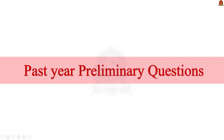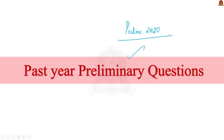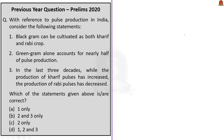Our first session is the previous year question discussion session. In this session, we are discussing three to four questions every day that were asked in the UPSC Civil Services preliminary examination of 2020. Today we have taken three questions. Let us start our discussion now. The first question is based on pulse production in India.